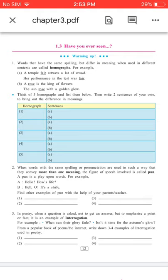B. A rose is the king of flowers. The sun rose with a golden glow. Think of five homographs and list them below, then write two sentences of your own to bring out the difference in meanings.